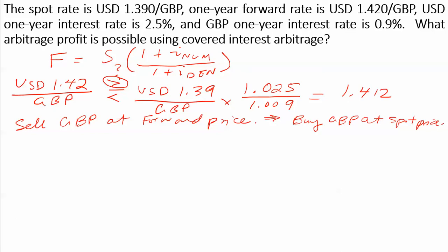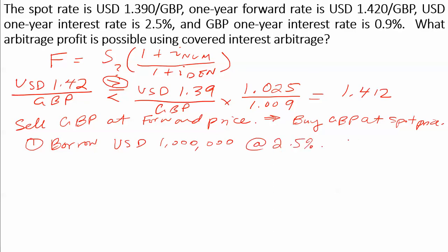We know that we're going to buy the British pounds at the spot price. Where will we get the British pounds? We have to buy them with dollars. Where will we get the dollars? We have to borrow, because we don't want to use any of our own money — arbitrage requires a zero net investment. So our first step is to borrow US dollars; I'll pick an arbitrary amount of a million dollars, borrowing at 2.5%. At this point, I also have to enter a forward contract to sell British pounds at the forward price, locking in the price at the beginning.